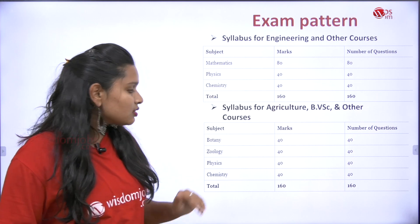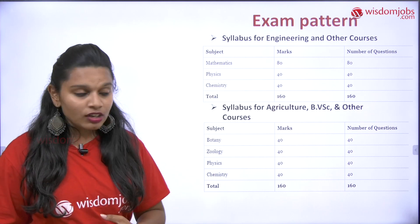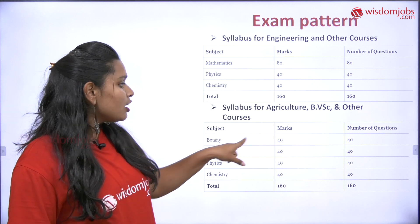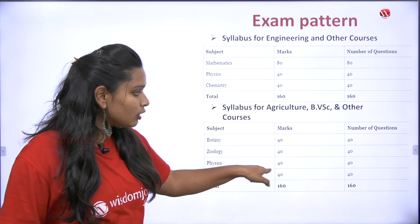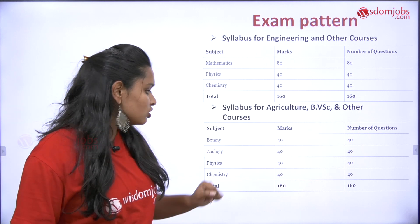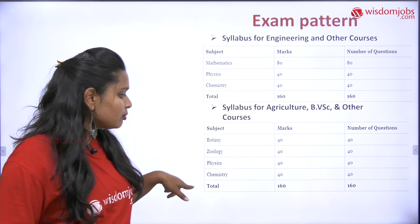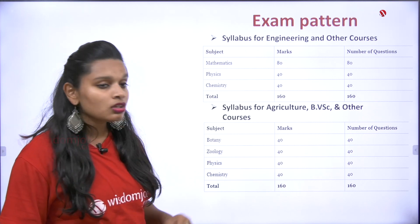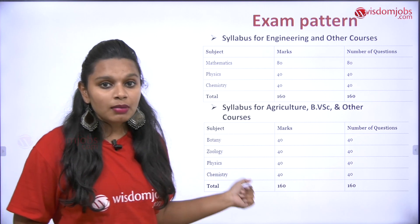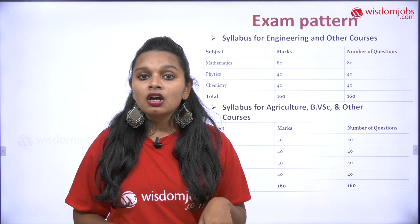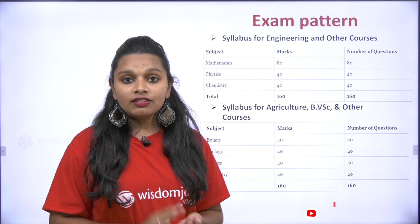For the agriculture stream, covering Bachelor of Veterinary Sciences and other courses like Horticulture and Animal Husbandry, the subjects are Botany — 40 marks for 40 questions, Zoology — 40 marks for 40 questions, Physics — 40 marks for 40 questions, and Chemistry — 40 marks for 40 questions. Overall, it is 160 questions for 160 marks, meaning one mark per question.